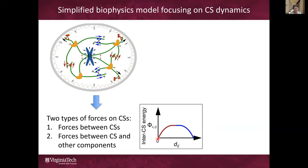For the intercentrosomal forces, we assume that the potential energy is a function of the distance between the two centrosomes, and the energy profile looks like a flipped bowl — the two centrosomes attract each other at short distances and repel each other at long distances. This actually has to be the case qualitatively, because if the energy were minimized at some intermediate distance, all the centrosomes would tend to stay at that intermediate distance from each other, creating a loose cloud rather than two poles.